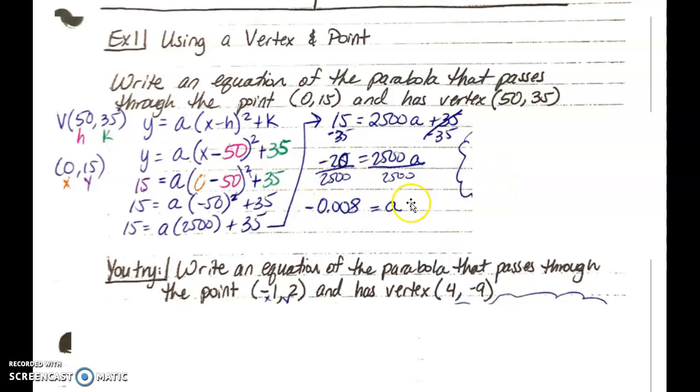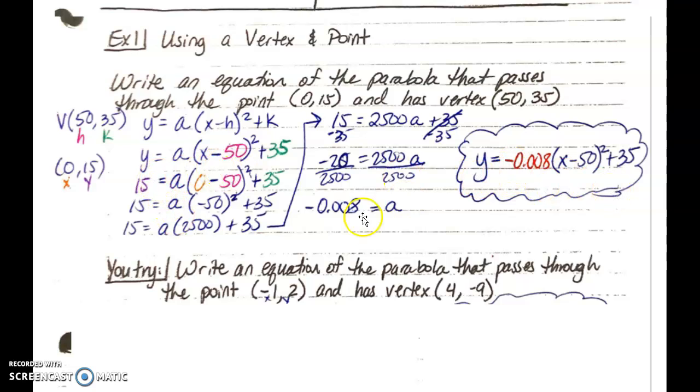Now, we found a, but I want an equation. I don't want just a. I don't box a. I'm going to take a, and I'm going to plug it in for a right here in the part where I had plugged in my vertex, and I did not know a. And so my final answer here is y is equal to negative 0.008 parentheses x minus 50 squared plus 35. Notice the y and the x remain y and x. They do not get plugged into, because this was a one-time scenario to find a. Now we are writing the function for all y's and all x's that work for this parabola here.